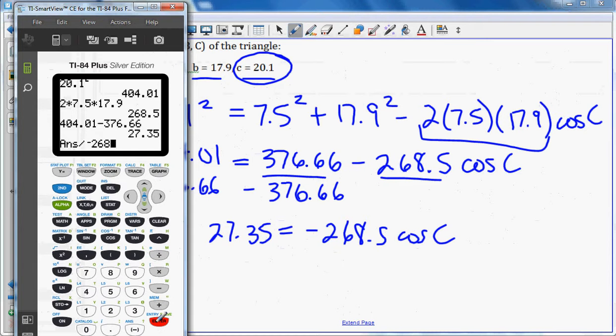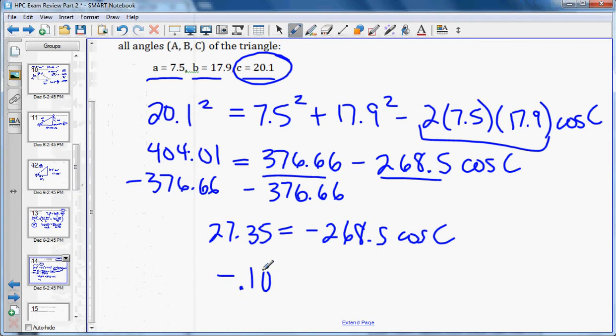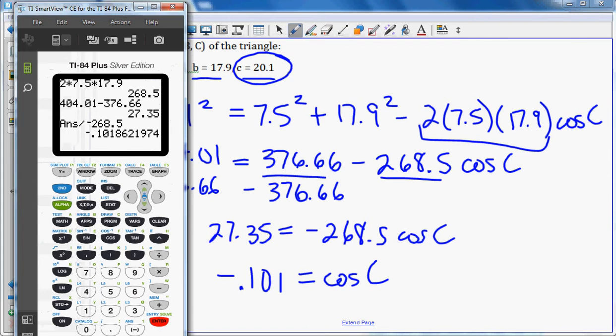We get negative 0.101 equals cosine of angle C. Again, to figure out the angle, we need to do arc cosine or inverse cosine of that number. Use that exact number by using the answer key. And we get 95.85 for angle C. So we have one of the angles and it's the biggest. Once we do that, we need to switch over to the law of sines.